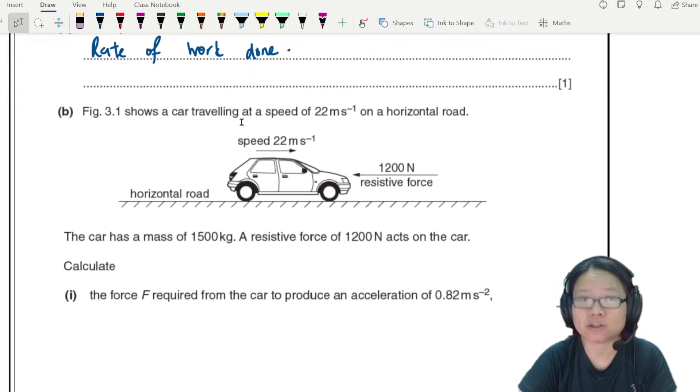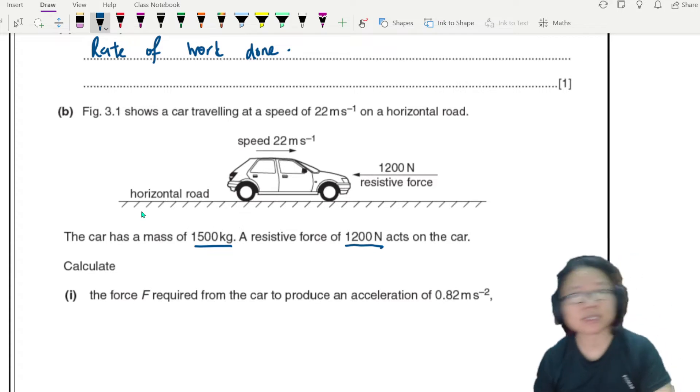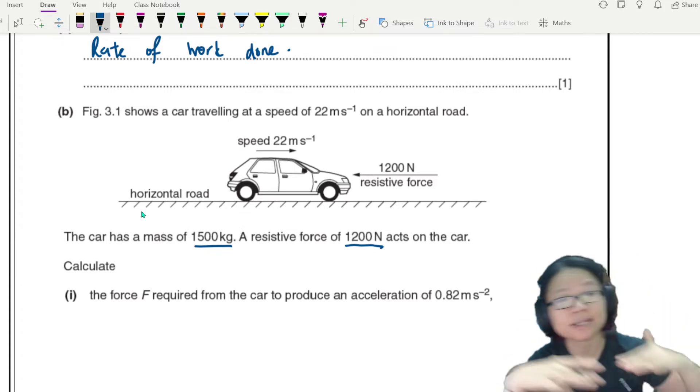3B: This one is a car travelling at 22 meters per second on a horizontal road. The car has a mass of 1500 kg. The resistive force is 1200 Newton acting on the car. Maybe air resistance, maybe friction between the tire and the road.